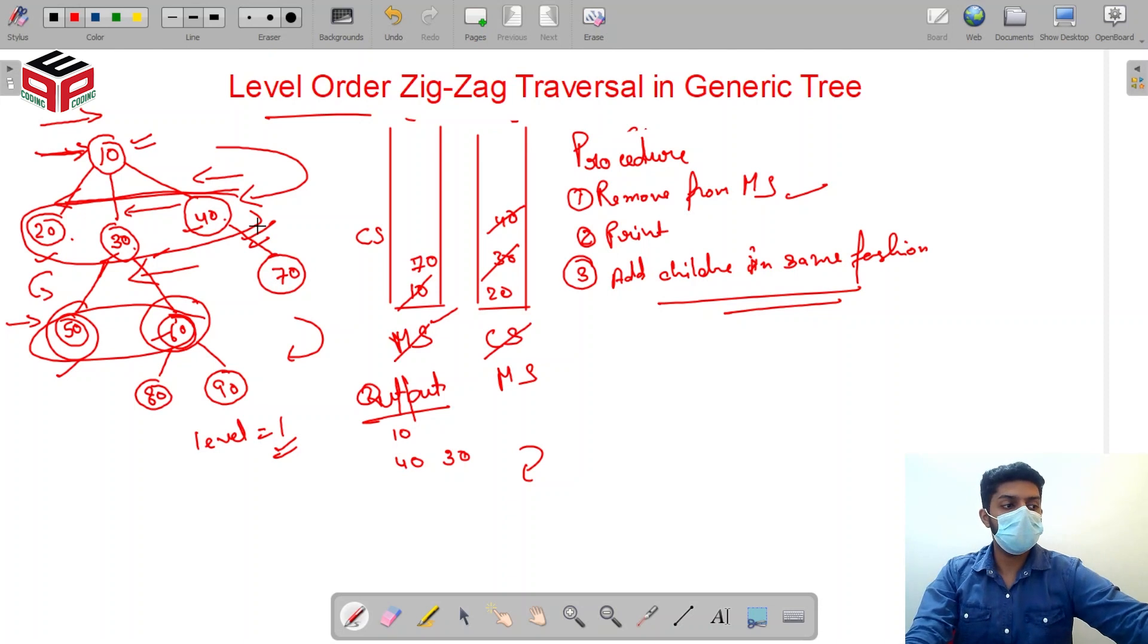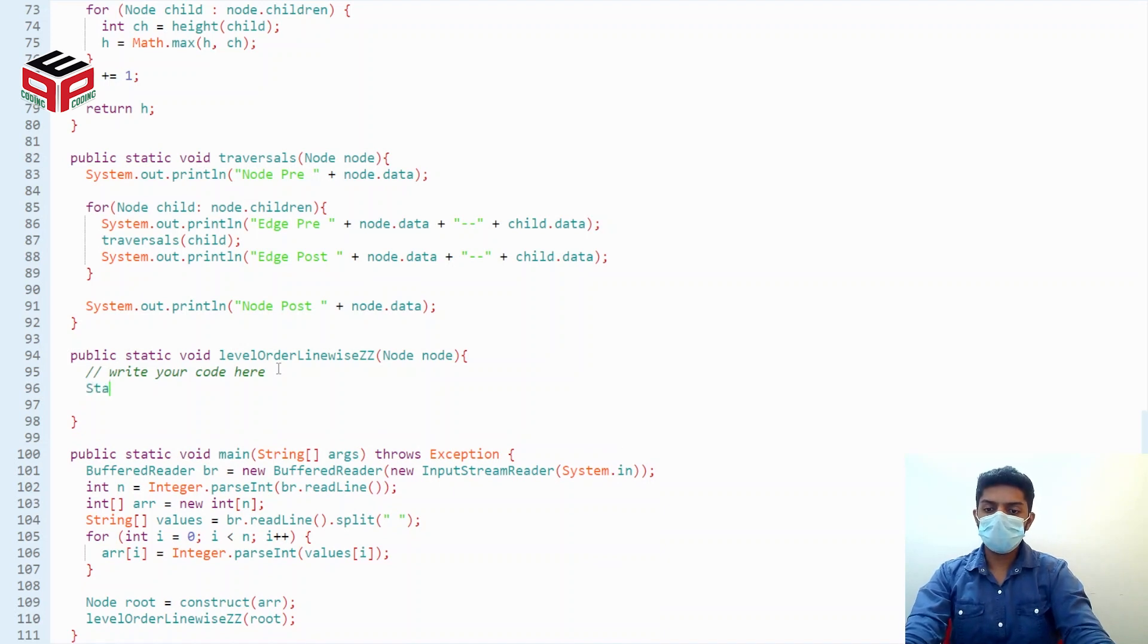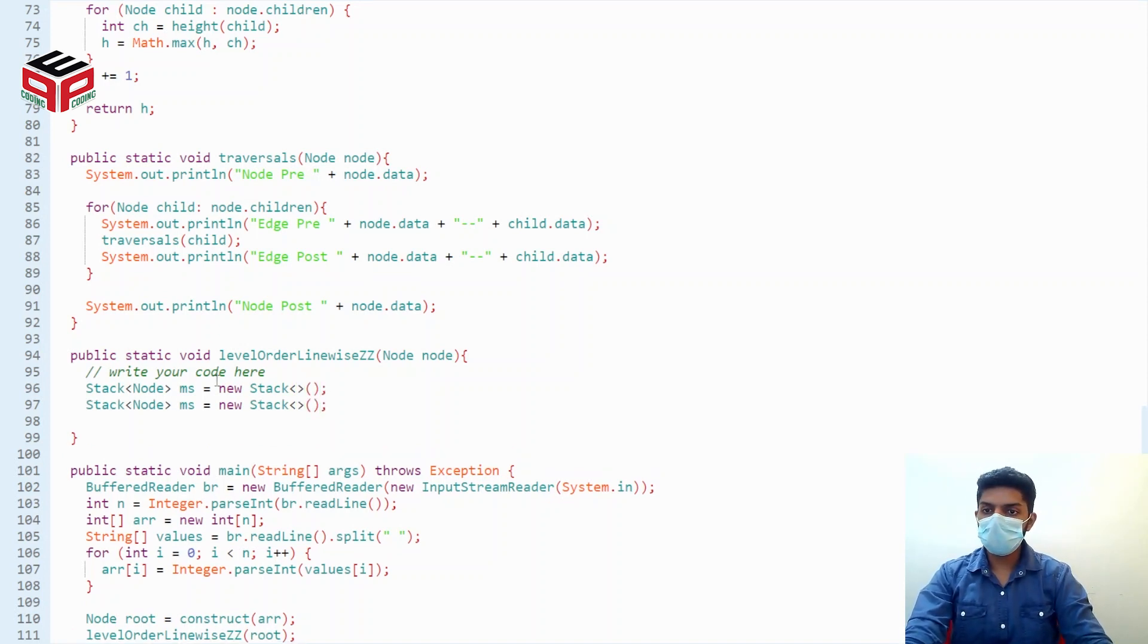Let me show you in the code. So I declare two stacks: stack of type node. This is called main stack equals to new stack.